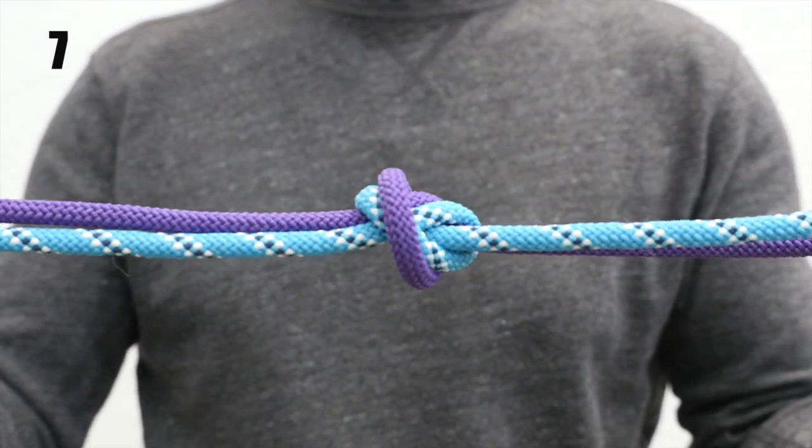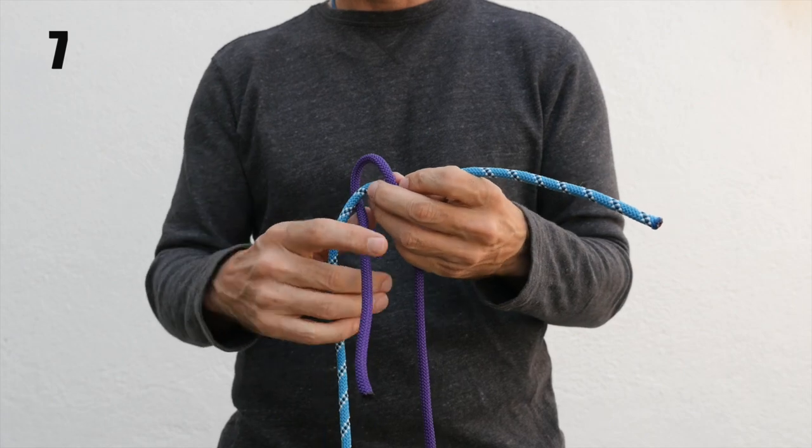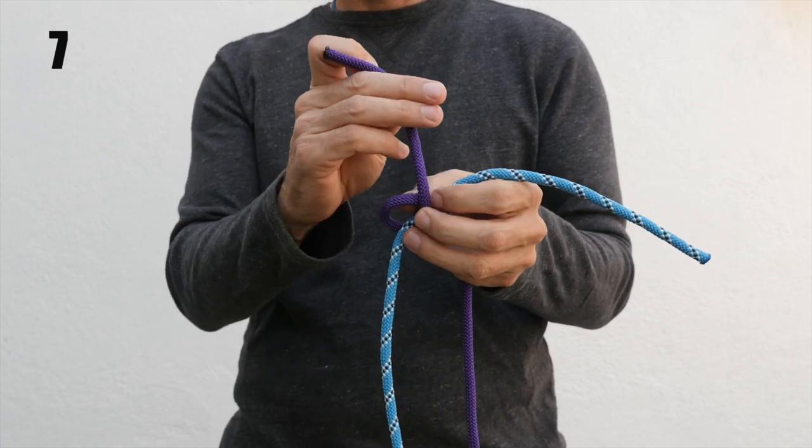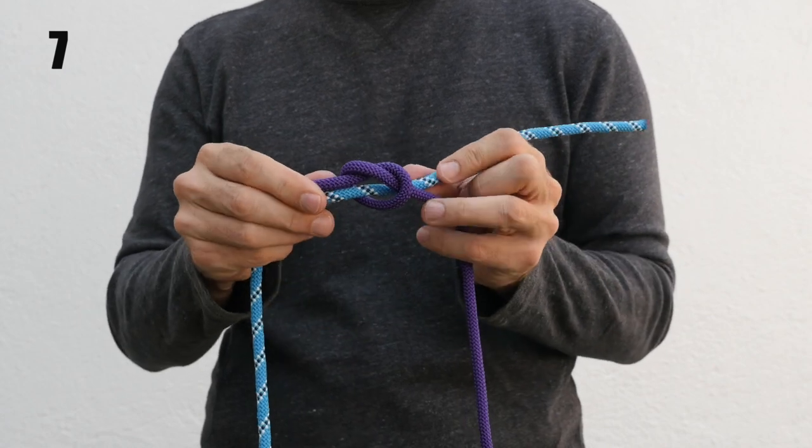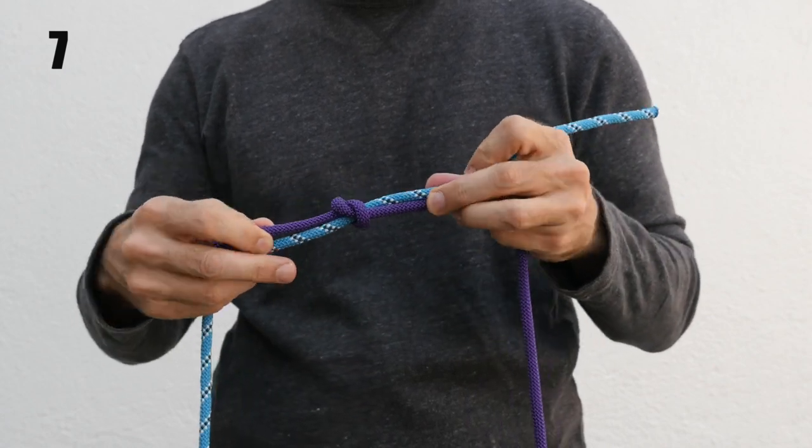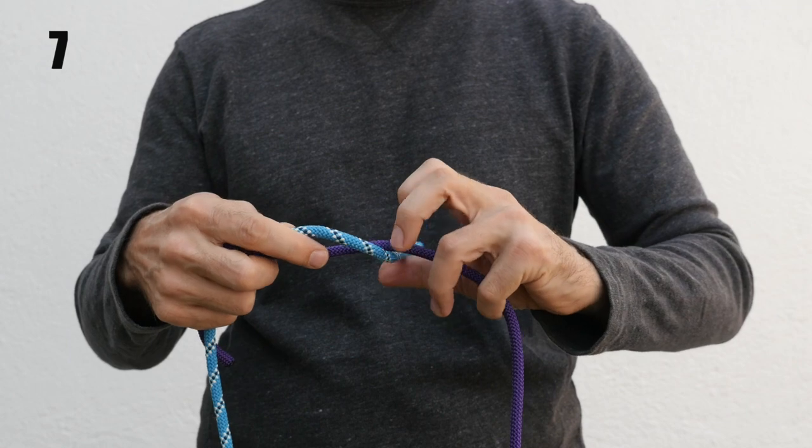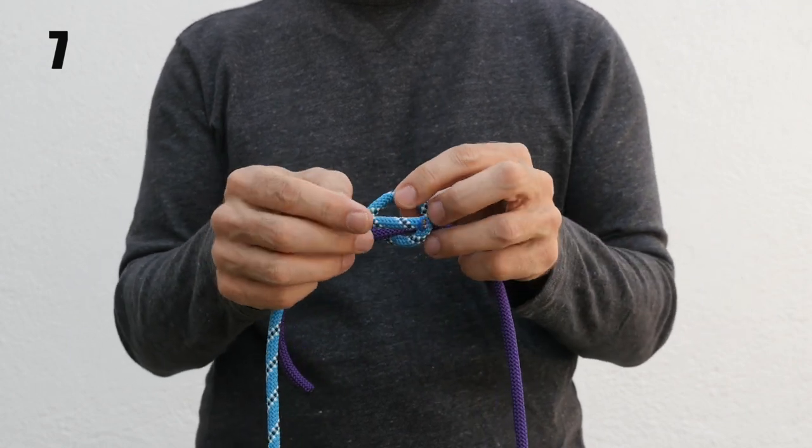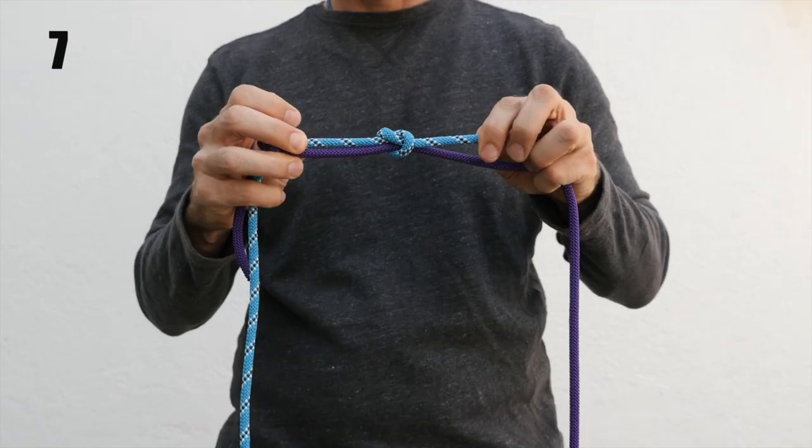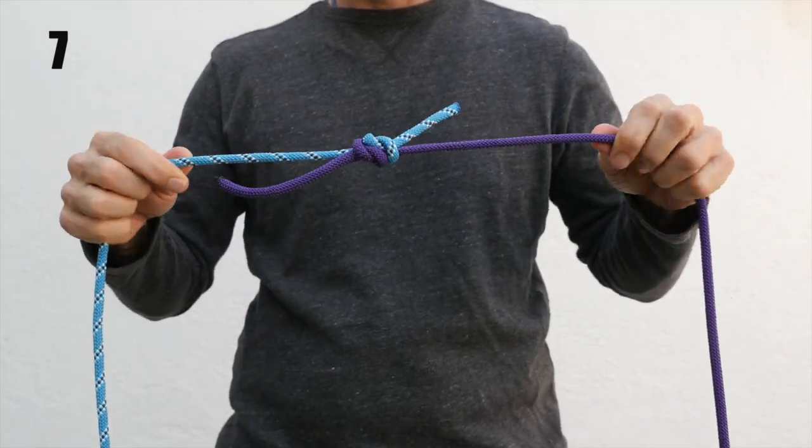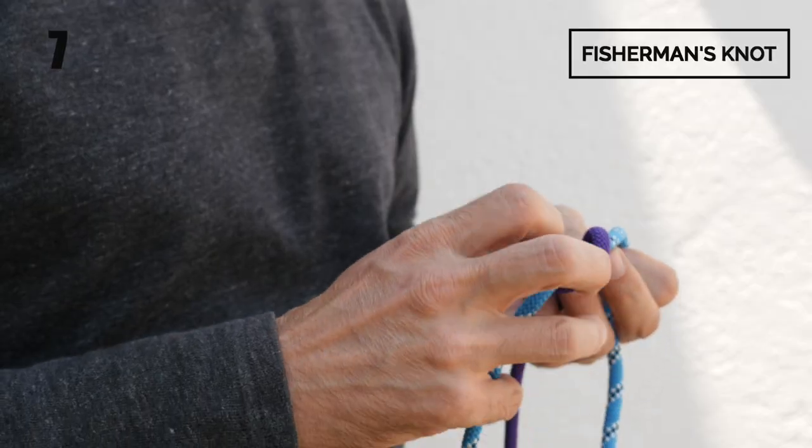Another option that's equally simple to tie is to tie your first rope to the second rope with a single overhand knot. Once that's done, then tie the second rope to the first rope again with another overhand knot, and then pull them together to cinch it up. This knot is called the fisherman's knot.